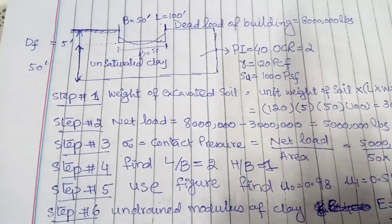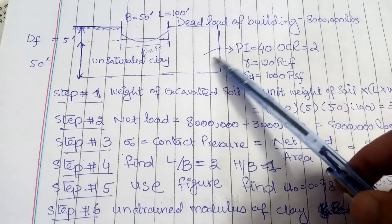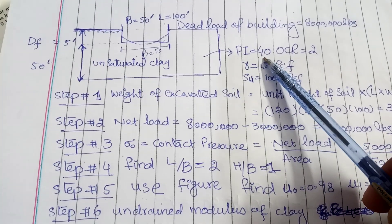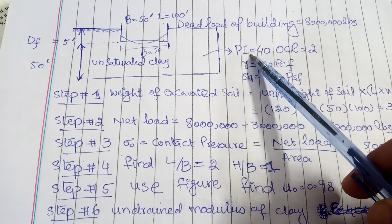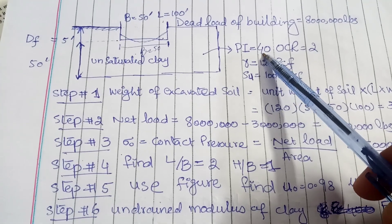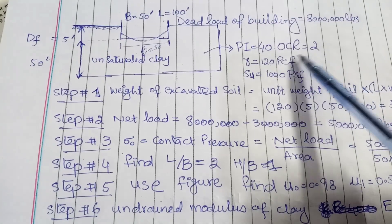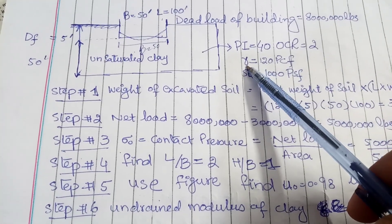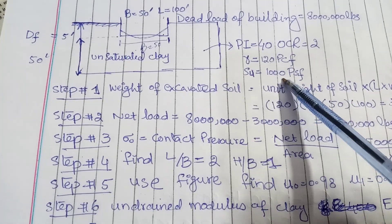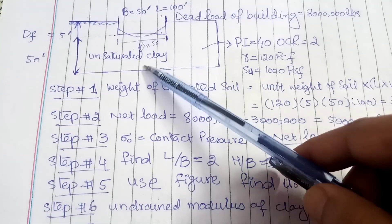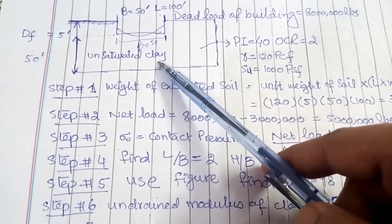So in this case, dead load of building is given and some other properties of soil are also given in this data. What is PI? PI is the plastic index, it is equal to 40. OCR, over-consolidation ratio, is equal to 2. This is the unit weight of soil, equal to 120 PCF, and saturation 1000 PSF. So soil type is also explained here, it is unsaturated clay.